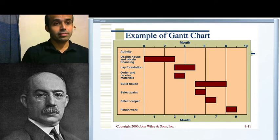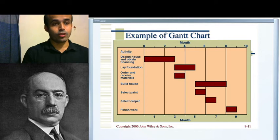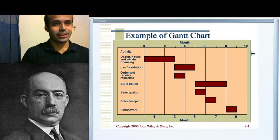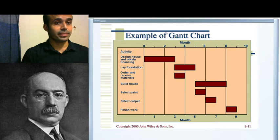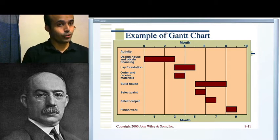It is called the Gantt chart because F.W. Taylor's colleague, whose name is Henry Lawrence Gantt, invented this chart method. Because of this, it became so much easier to finish a task within a short time. We will discuss how, now.